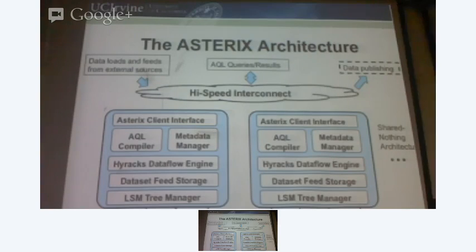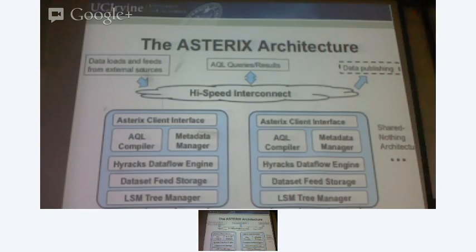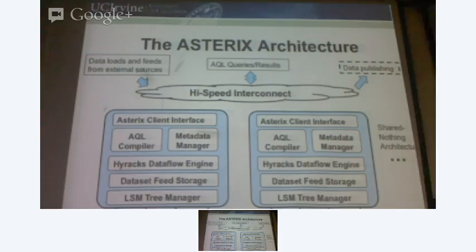You build this kind of structure and then you replicate it — each node is running this stack. What's going to happen is that you have data loads and feeds from external sources — the web and whatever sources — to receive data into the system. People are going to write queries in AQL and get the results back. And data publishing basically means you can subscribe to data, and the system will notify you. But that's a work in progress right now.